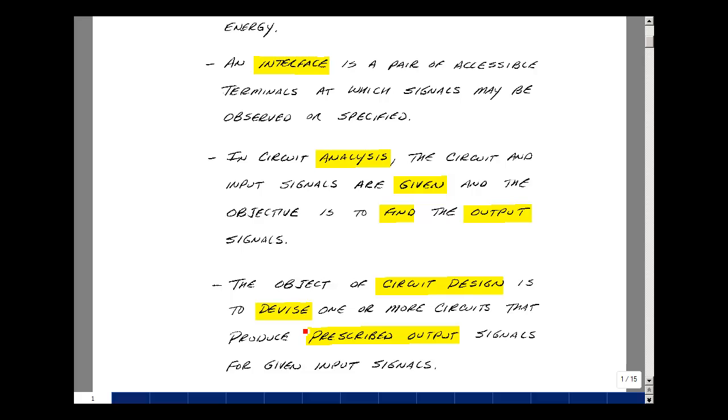An interface is a pair of accessible terminals at which signals may be observed or specified. In circuit analysis, the circuit and the input signals are given, and the objective is to find the output signals. The object of circuit design is to devise one or more circuits that can produce a prescribed output for a given set of inputs.